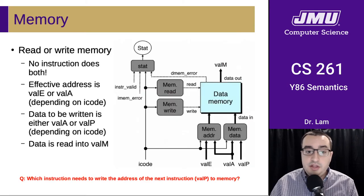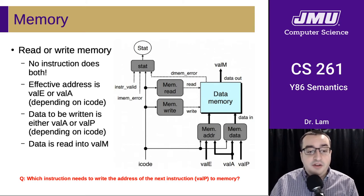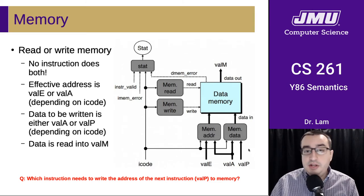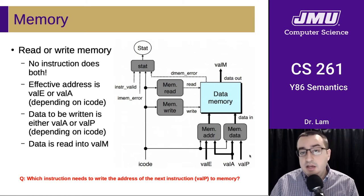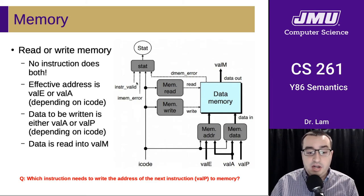This brings us to the memory phase, where we either read or write memory. There is no instruction that does both — you either read or you write. The effective address is either ValE or ValA depending on which instruction we're doing. If we're doing a data write to memory, the data to be written is either ValA or ValP depending on the iCode. Data is always read into ValM. We can also set the CPU status code to indicate whether or not there was an error.